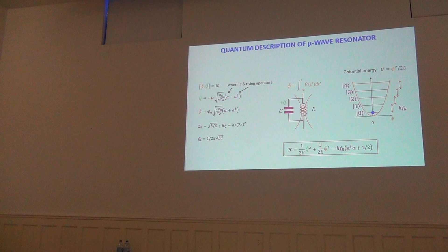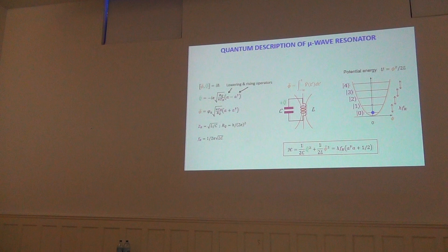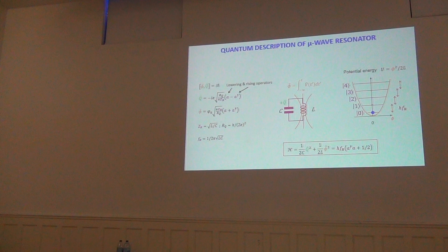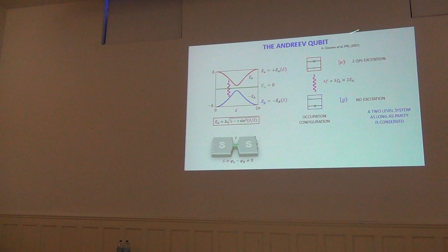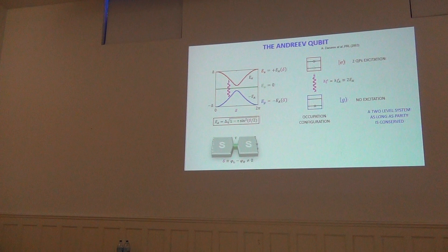Importantly, even at zero photons there are fluctuations — the current, charge, and phase all have zero-point fluctuations. This is key for the coupling with the Andreev system. The other part of the circuit is the Andreev qubit: only the ground state and the excited state with two quasiparticles are coupled by photons, since parity must be conserved. The transition energy is twice EA.